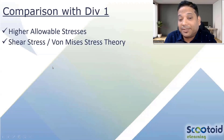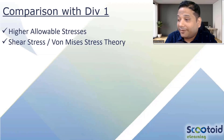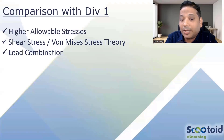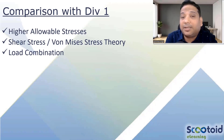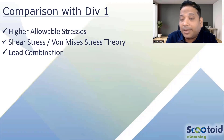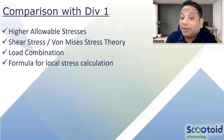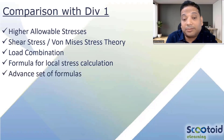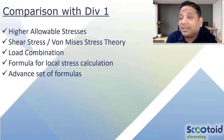Summarizing the differences in Division 1 and Division 2: Division 2 Part 4 is based on shear stress theory, Part 5 on Von Mises stress theory. There are also load combinations defined in Division 2 — a clear guideline and table showing how to combine wind, seismic, snow load, and dead weight with pressure. Division 1 has no such guideline. Division 2 also provides formulas for local stress calculation at junctions such as cone-to-shell, with a very advanced set of formulas.